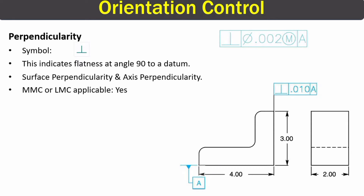Our first orientation control is perpendicularity. This is the symbol for perpendicularity. We measure the flatness of a part at 90 degrees with respect to a reference that we call a datum. If you can see this figure, this right here is a datum — we call it datum A. We are going to measure the flatness of this surface, which is at 90 degrees with respect to this datum. This right here is a feature control frame.